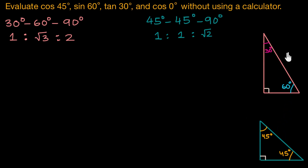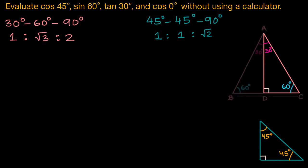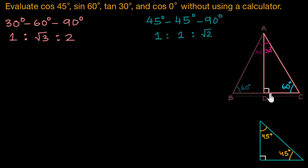So let's take a look at our 30-60-90 triangle. We can imagine it to be a part of an equilateral triangle ABC. As you can see, each angle is 60 degrees, so ABC is an equilateral triangle and AD is the perpendicular bisector of side BC.